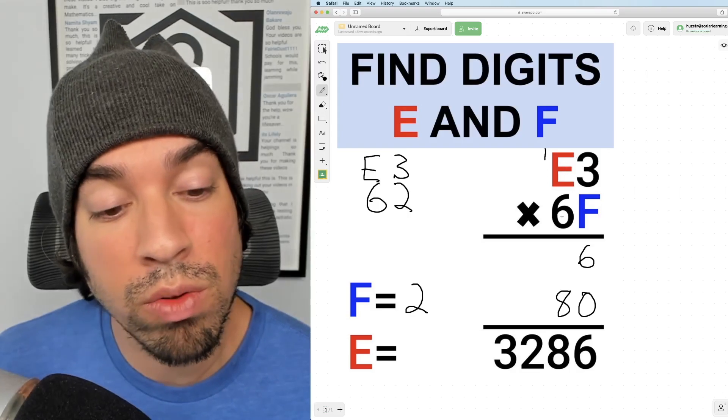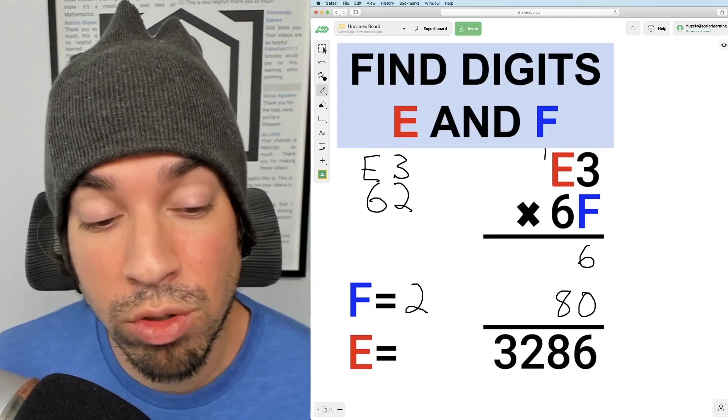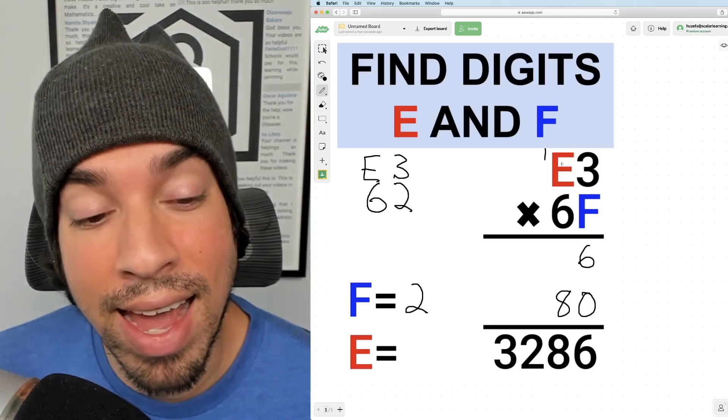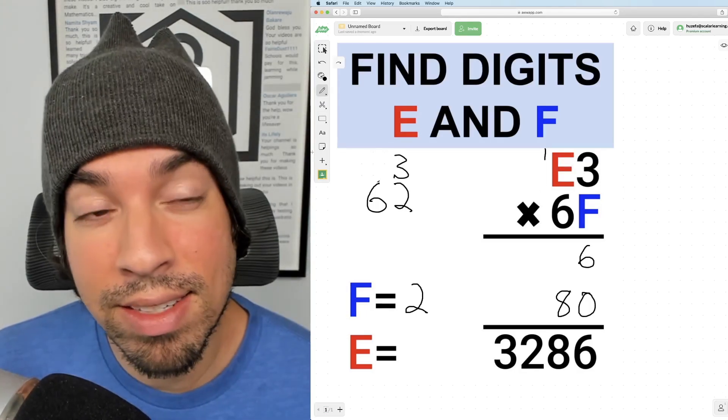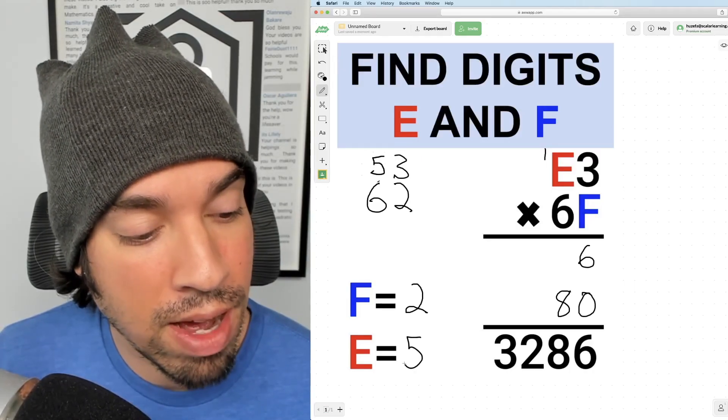If E were a 0, this would be 62 times 03 or 62 times 3, way too small. Therefore, E has to be a 5. So in this case, it's 62 times 53, which puts E at 5.